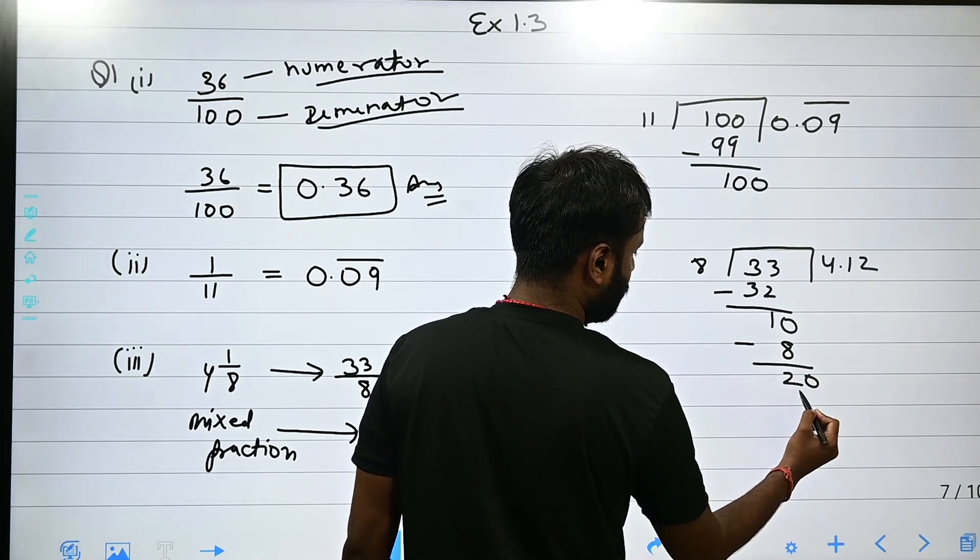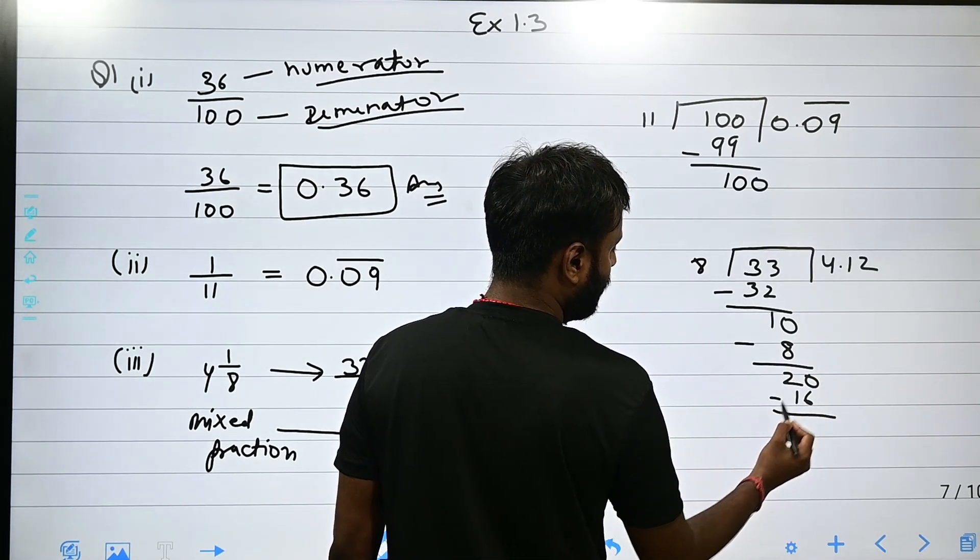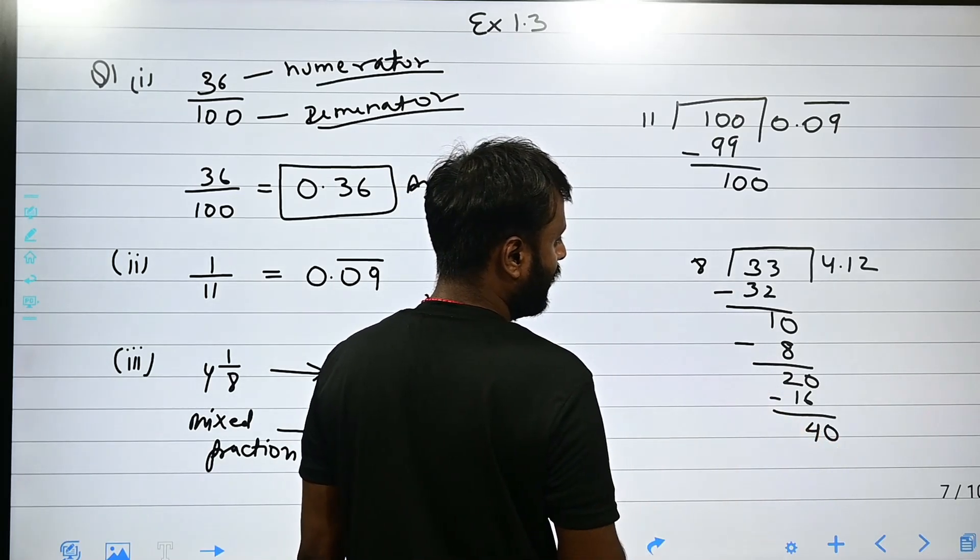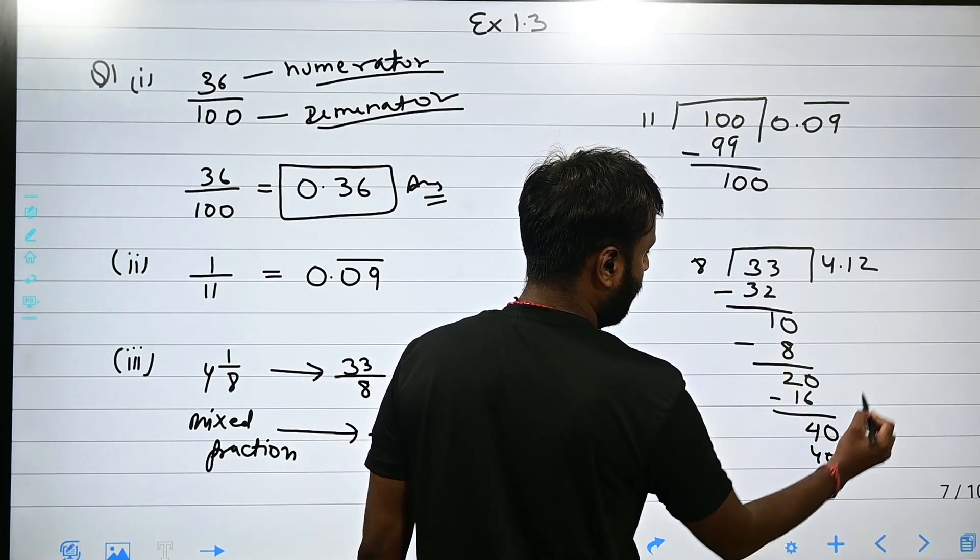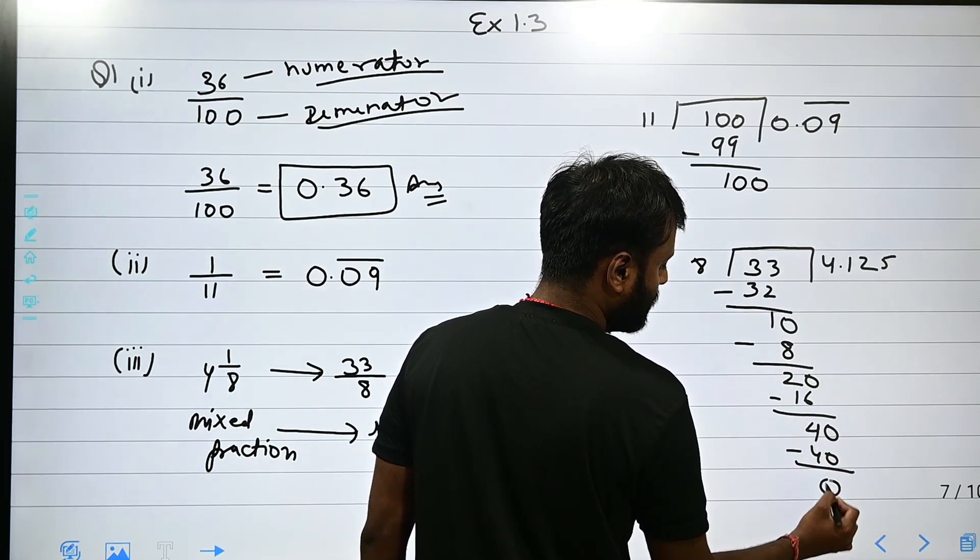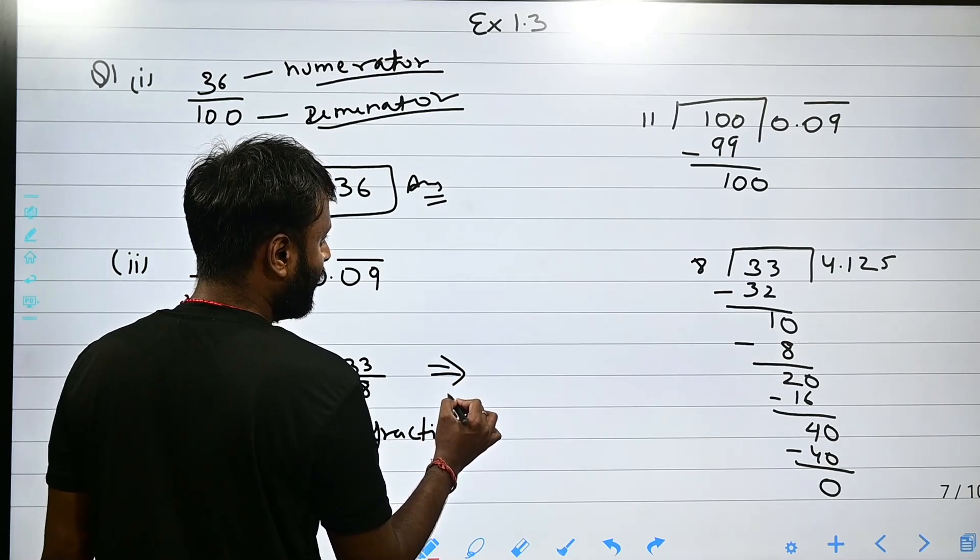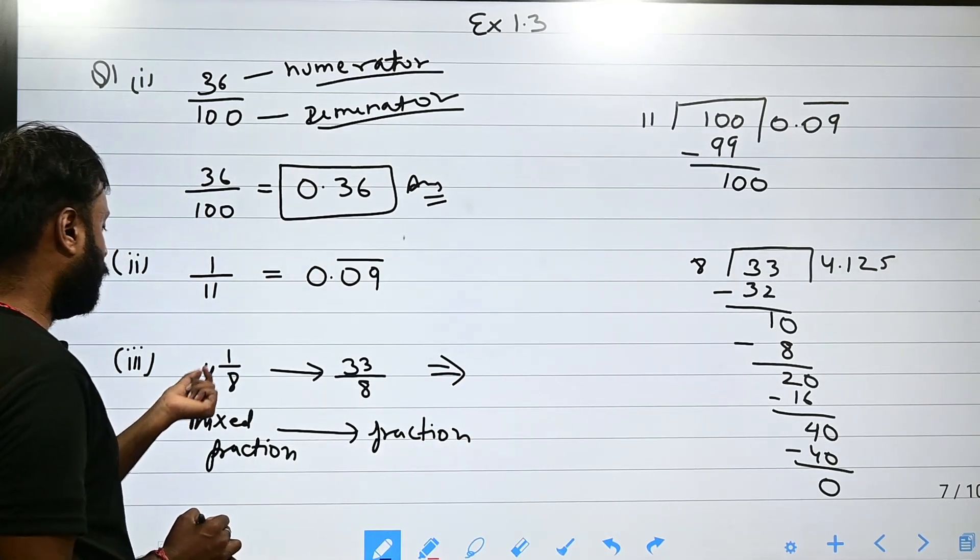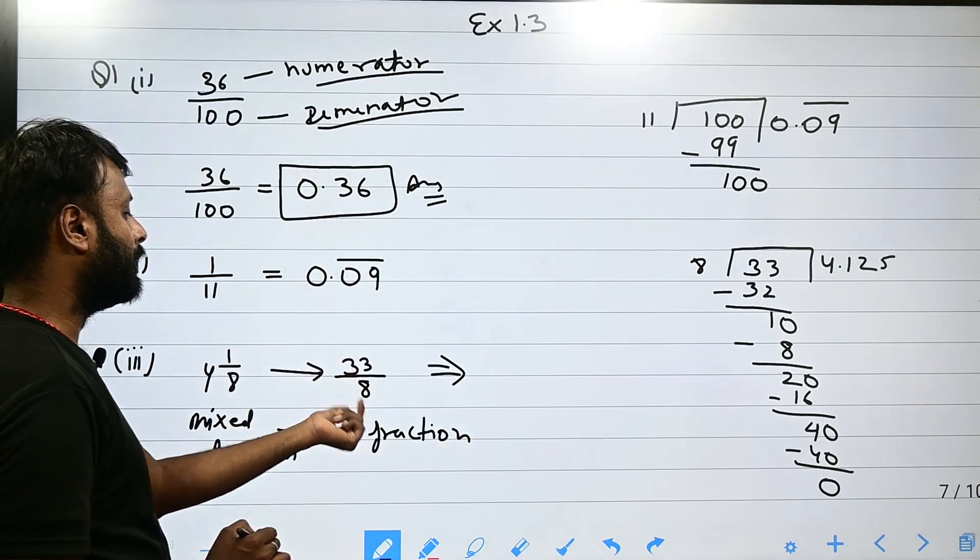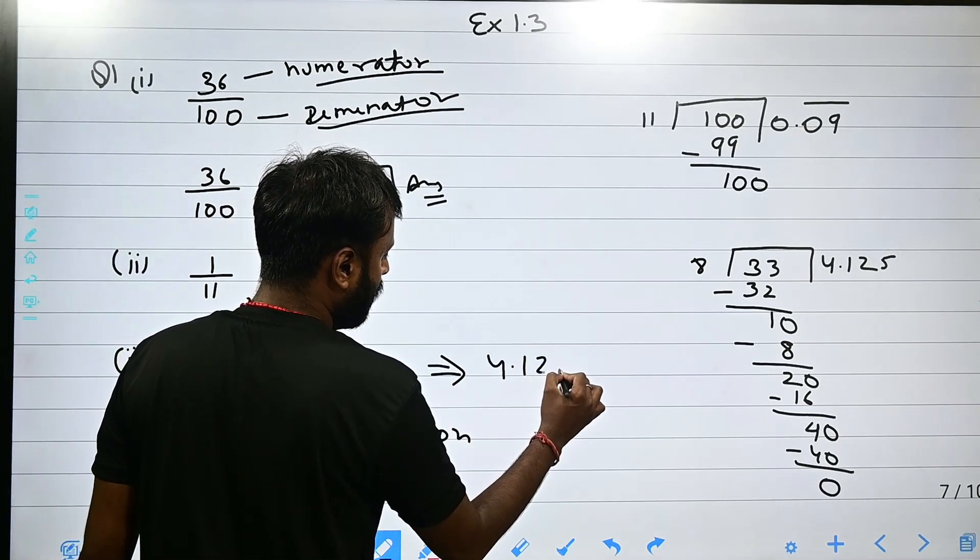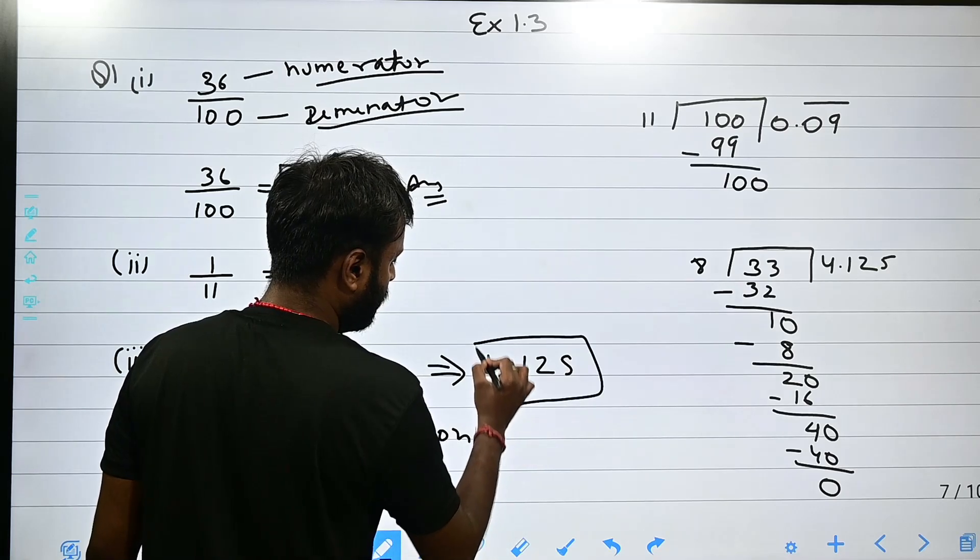We add 0. 8 into 40 is 5, we write 5. Remainder is 0. So it means that our decimal expansion is 4 1 by 8, which we converted to 33 by 8, equals 4.125. This is your answer.